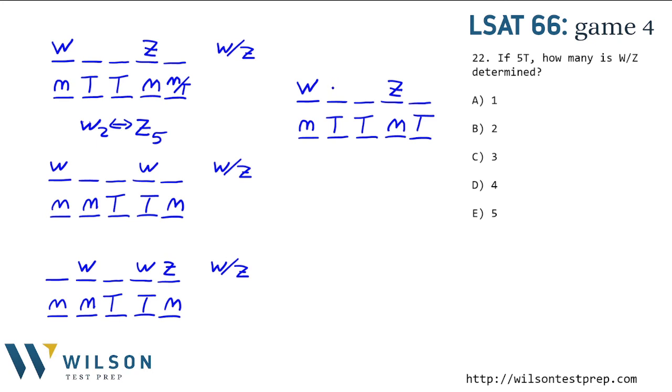We have complete freedom to make, for example, this one W or Z. Once we do that, it doesn't need to be the opposite. The two and five opposite thing we still have. But they could be either. This one could be either. So there's only two that are determined.